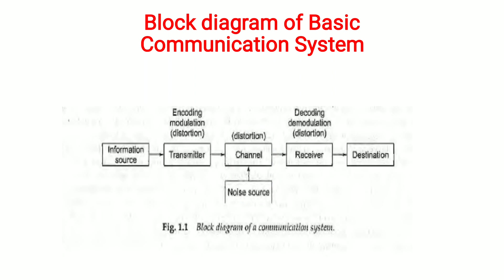The channel can be wired or wireless. Wired channels include copper wire, coaxial cable, and fiber optic cable. Wireless channels include radio waves and microwaves.